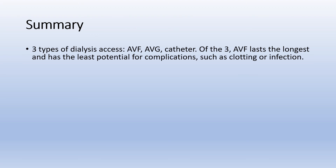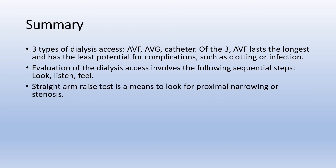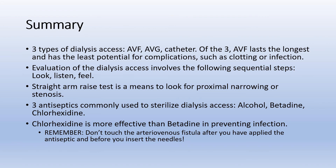In summary: there are three types of dialysis access — AV fistulas, AV grafts, and catheters. AV fistulas last the longest and have the least potential for complications such as clotting or infection. Evaluation of the dialysis access involves the sequential steps: look, listen, and feel. The raised arm test is a good way to quickly look for proximal stenosis. Of the three antiseptics commonly used — alcohol, betadine, and chlorhexidine — chlorhexidine is far more effective in preventing infection. Important: do all your feeling before applying the antiseptic, then do not touch the fistula with anything except the needle.